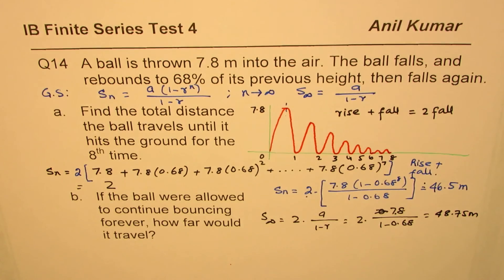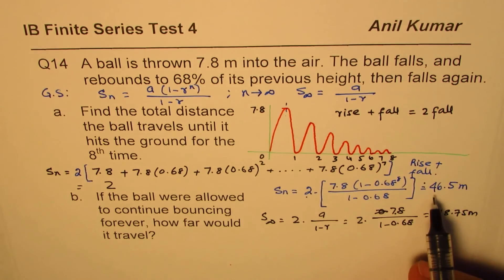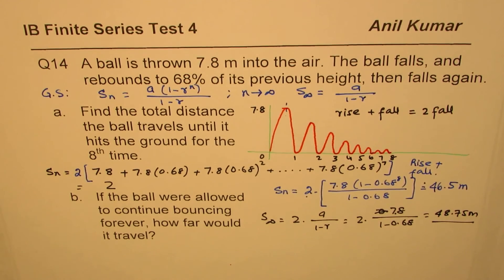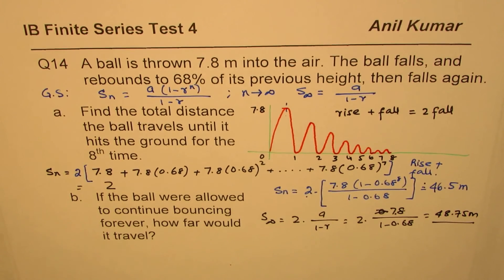So 48.75 meters — slightly more than the eight-term answer. That's the answer for Part B, and that is how you should be doing it.